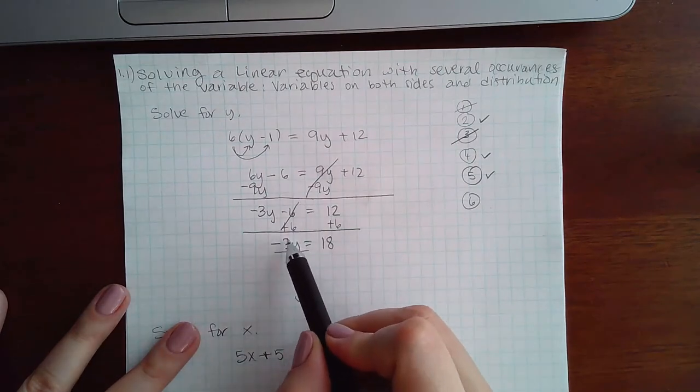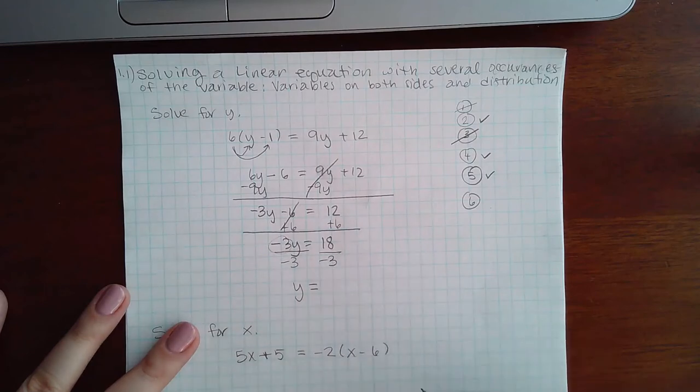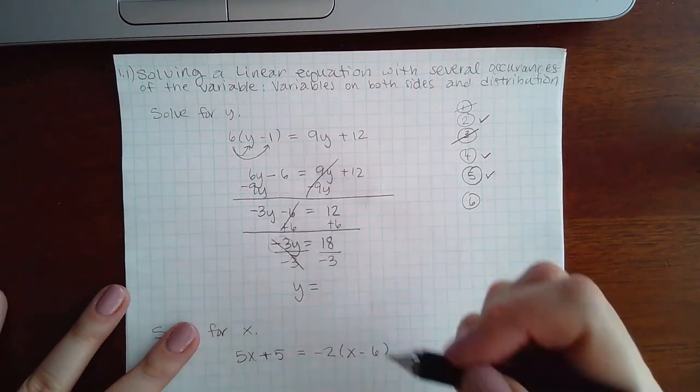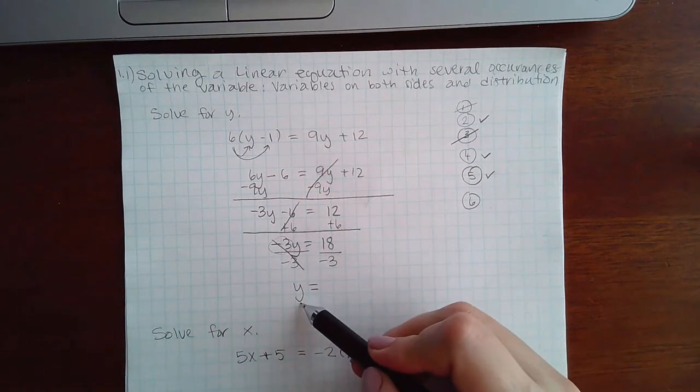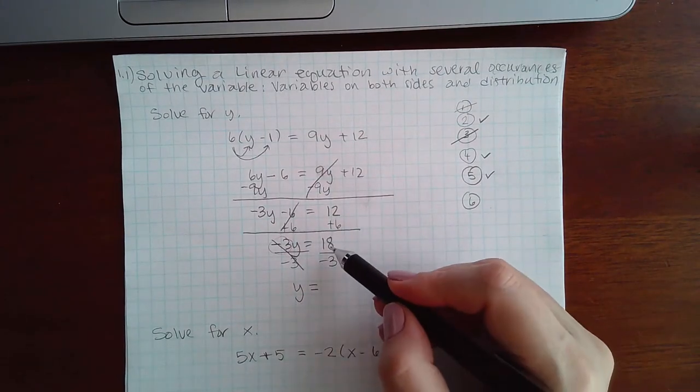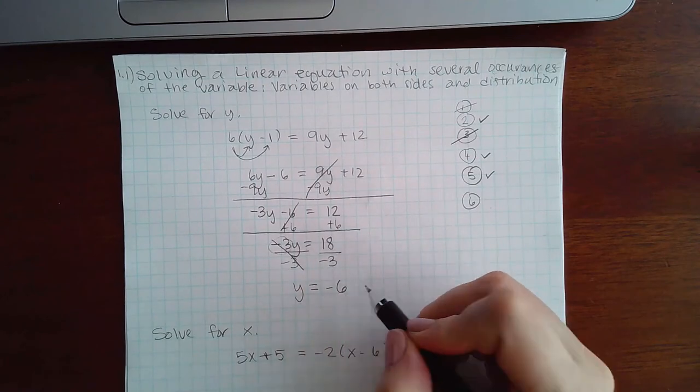So I need to get rid of this negative 3, so I'm going to divide both sides by negative 3. That cancels the negative 3 coefficient, and I get the y all by itself. And here I have 18 divided by negative 3, which is negative 6.